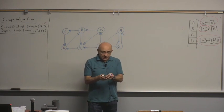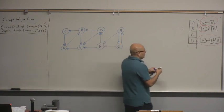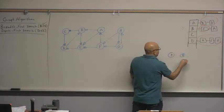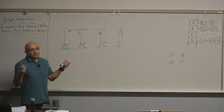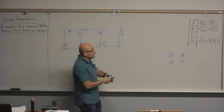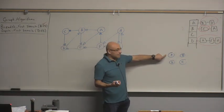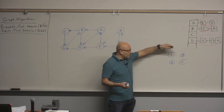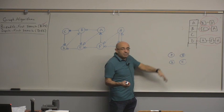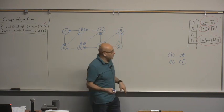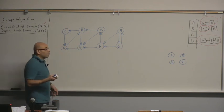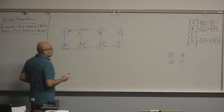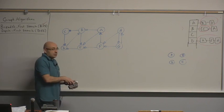In an extreme case, if you have a totally disconnected graph with no edges — like A, B, C, D — you will need four sources. When you start from A, you will only visit A and not any other vertices. Each vertex will only visit itself. More connected graphs will require fewer sources, and less connected graphs will require more sources.